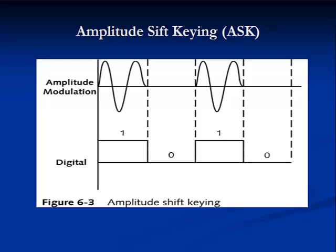In amplitude shift keying, or ASK, you can think of it as digital AM. The shifts in amplitude are translated into zeros and ones so the signal can be interpreted by a digital system. ASK is used on voice grade lines and older telephones. Because it is highly susceptible to noise interference, it is not used in modern transmission.